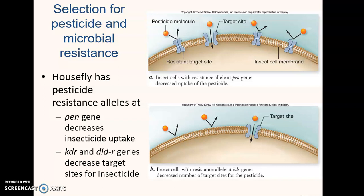At this point, VRSA is still rare, but it's really only a matter of time before it becomes more prevalent. In the U.S. alone, around 2 million people a year are sickened due to drug-resistant bacteria, and around 23,000 people die. So it's definitely a significant problem.